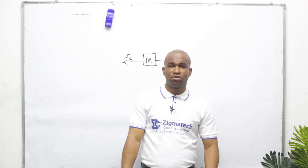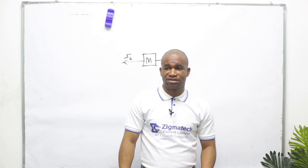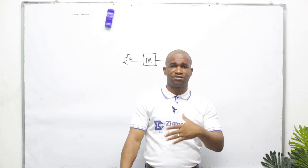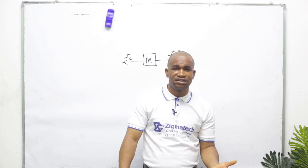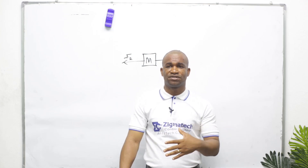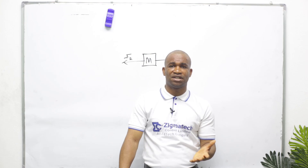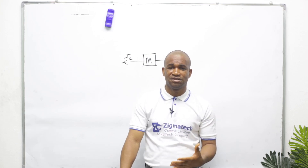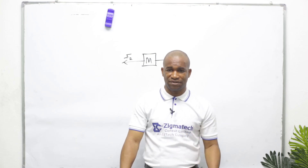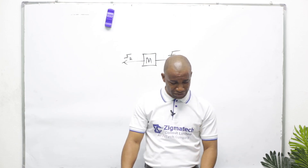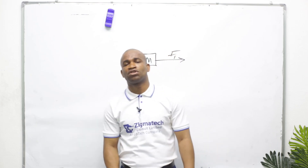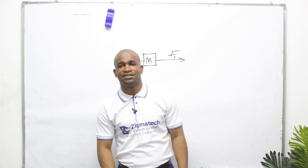Number seven is machines. Here we talk about mechanical advantage and velocity ratio, and we also talk about the efficiency of a machine and everything related to machines.